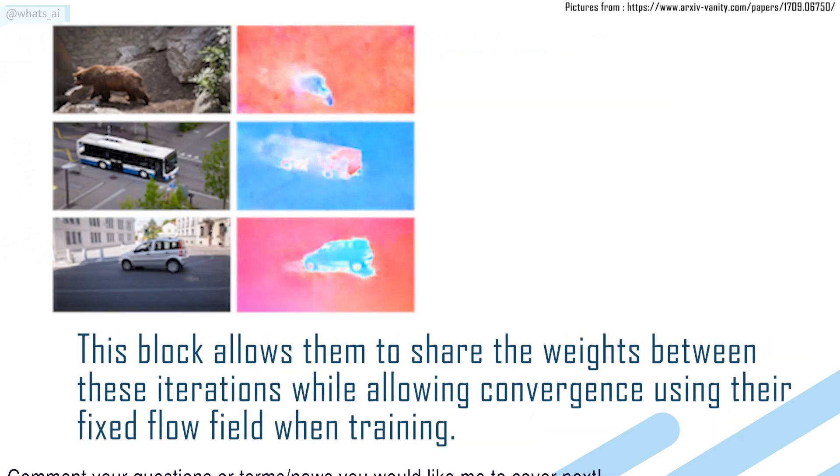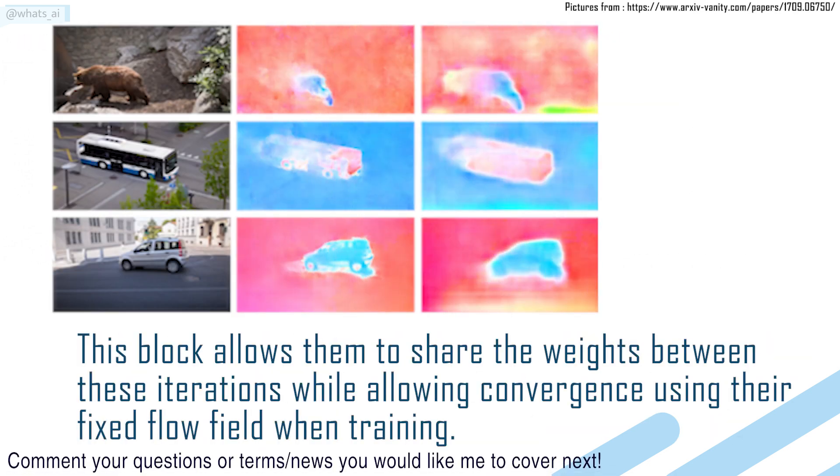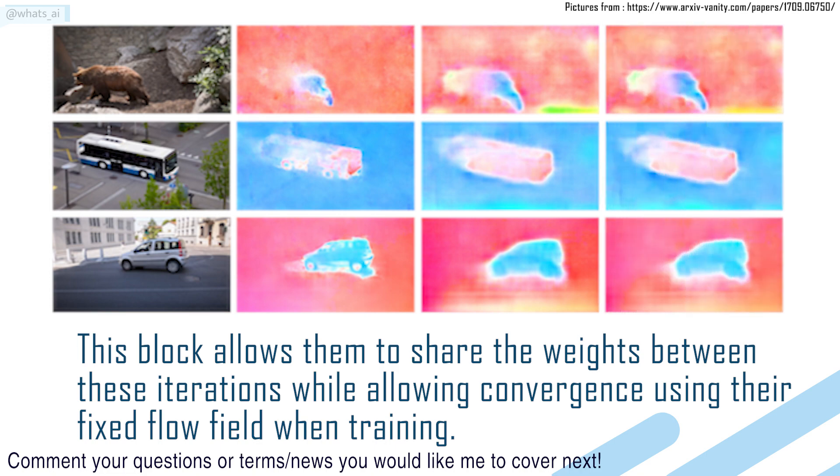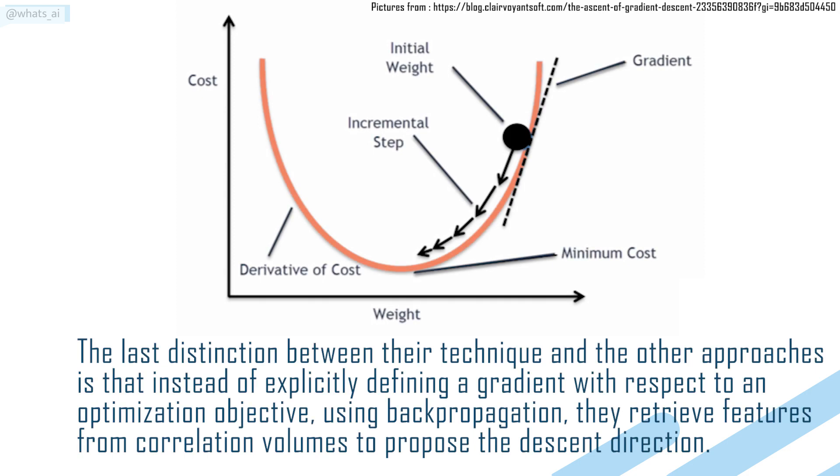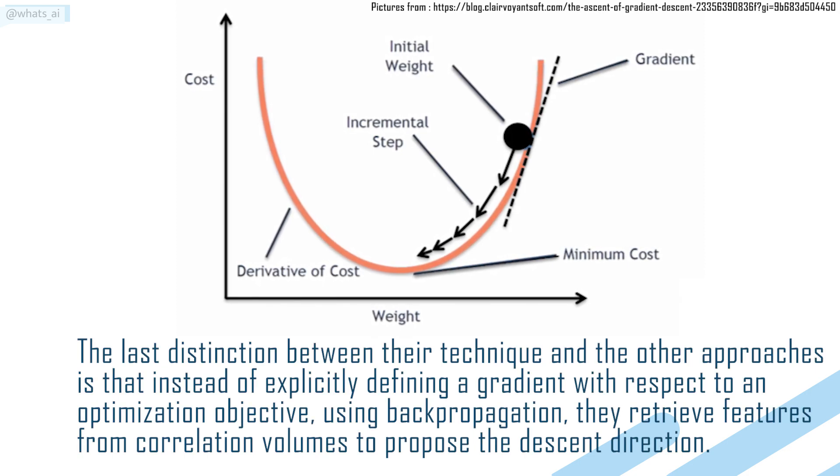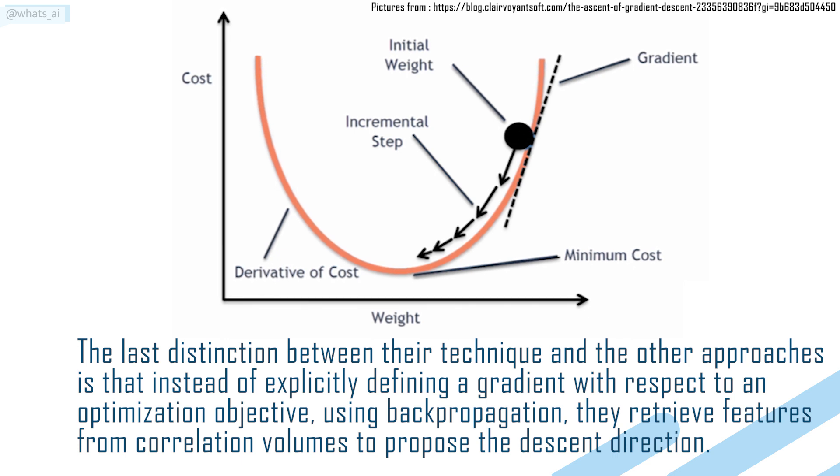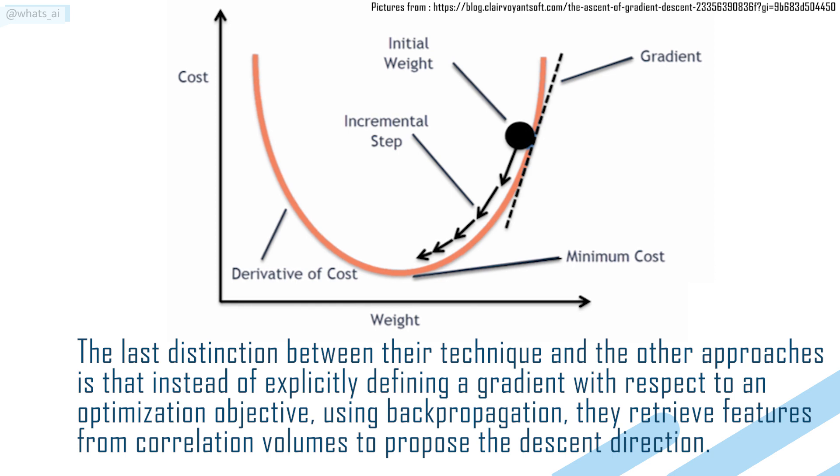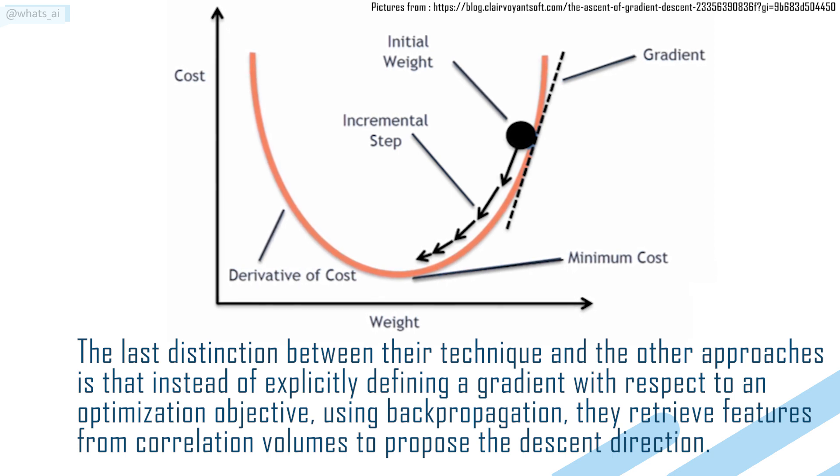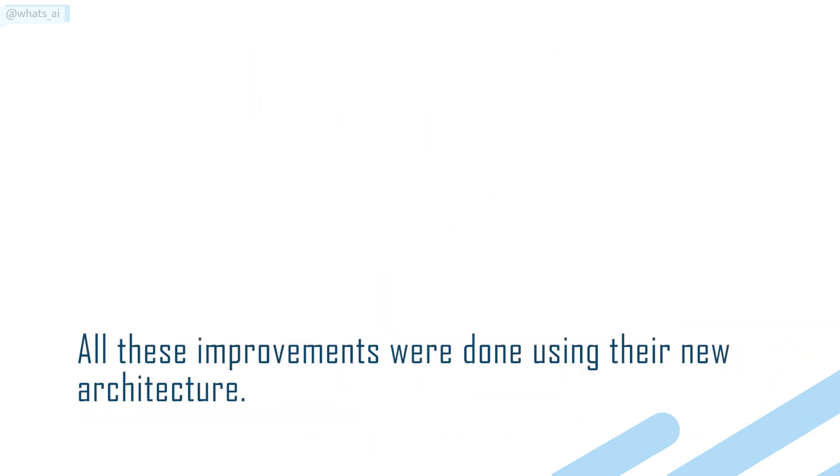This block allows them to share the weights between these iterations, while allowing convergence using their fixed flow field when training. The last distinction between their technique and the other approaches is that instead of explicitly defining a gradient with respect to an optimization objective using backpropagation, they retrieve features from correlation volumes to propose a decent direction. All these improvements were done using their new architecture.